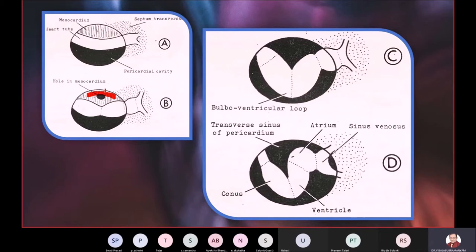Now that mesocardium has to completely disappear. Only then can the heart start looping. I repeat, the first step in the looping of the heart is the disappearance of the mesocardium.